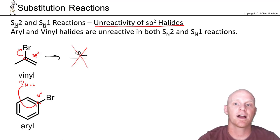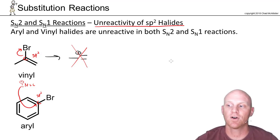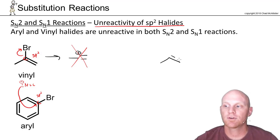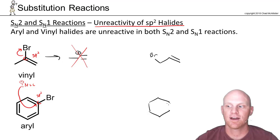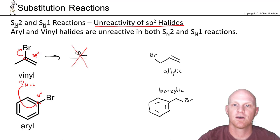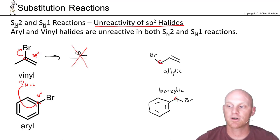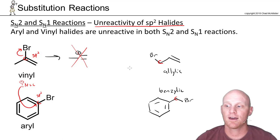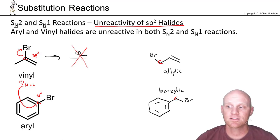They're both completely unreactive in both SN1 and SN2 reactions. Don't confuse these with two very similar-looking alkyl halides that are highly reactive — the allylic halide and the benzylic halide. The key is realizing that the halogen is not attached to an SP2 hybridized carbon but to an SP3 hybridized carbon, one that is adjacent to a pi electron. If we formed a carbocation, it would be resonance stabilized in both cases.